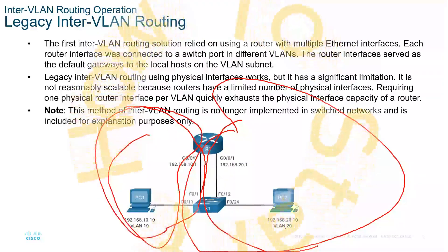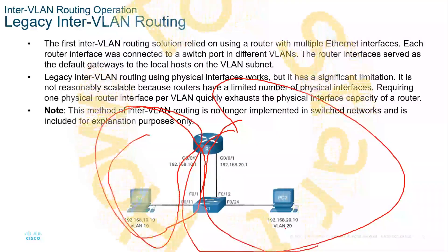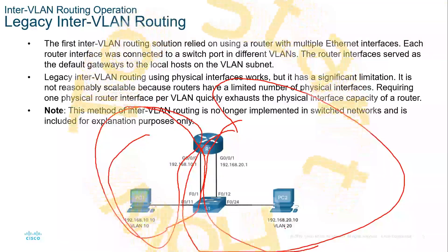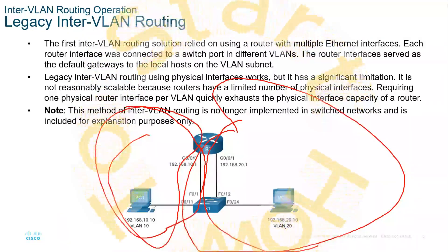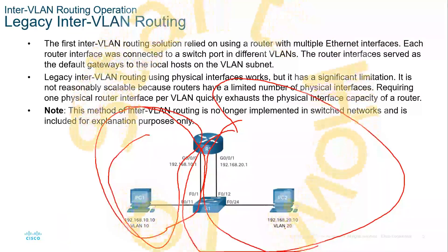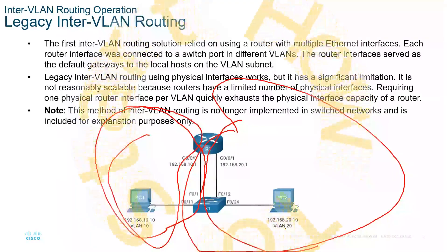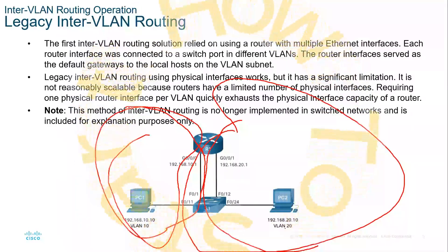With legacy, if you have two VLANs, you're using two ports. If you have three VLANs, you're using three physical ports. Legacy is all about VLANs being mapped to separate physical ports.